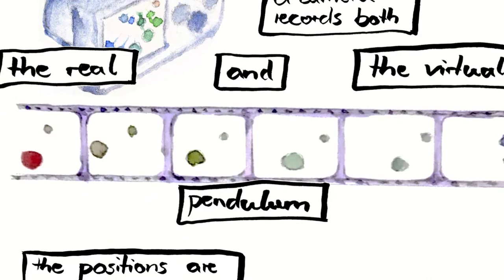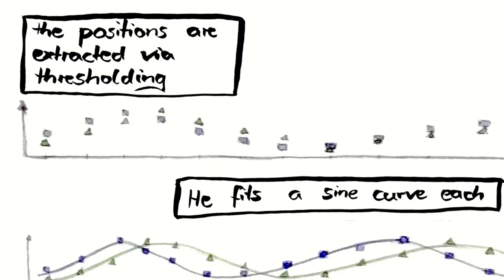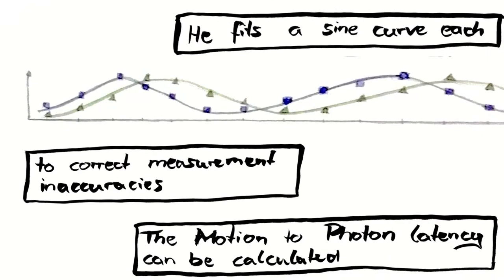The positions are extracted while thresholding. He fits a sine curve each to correct measurement inaccuracies. The motion to photon latency can be calculated from the phase difference.